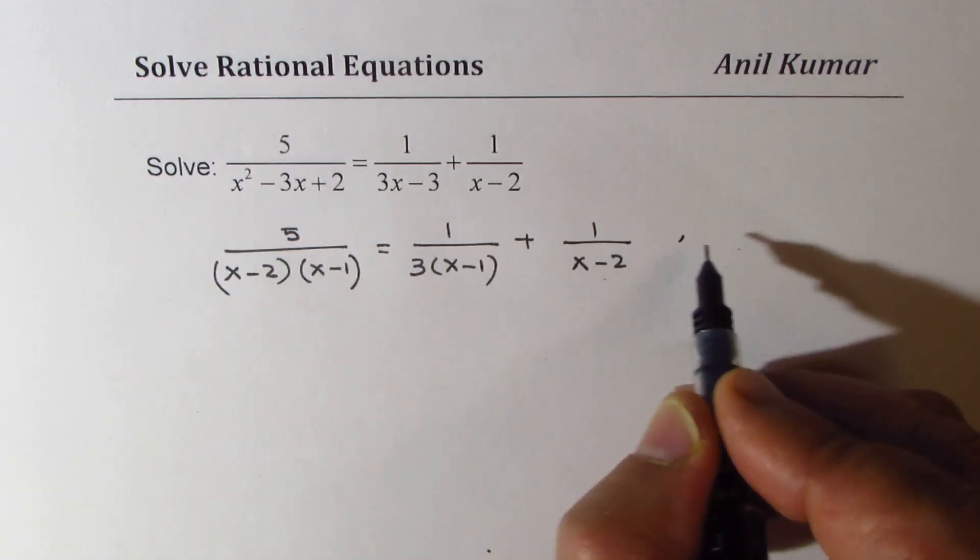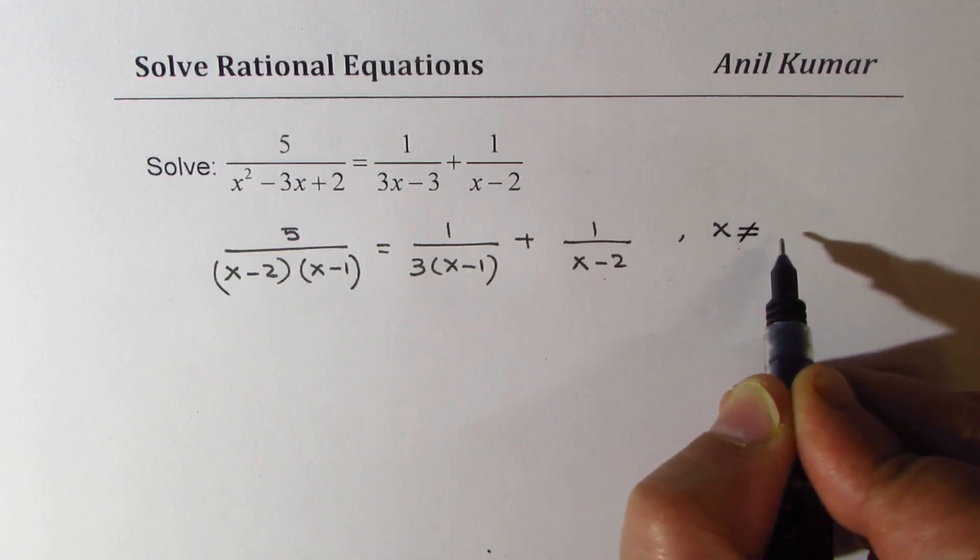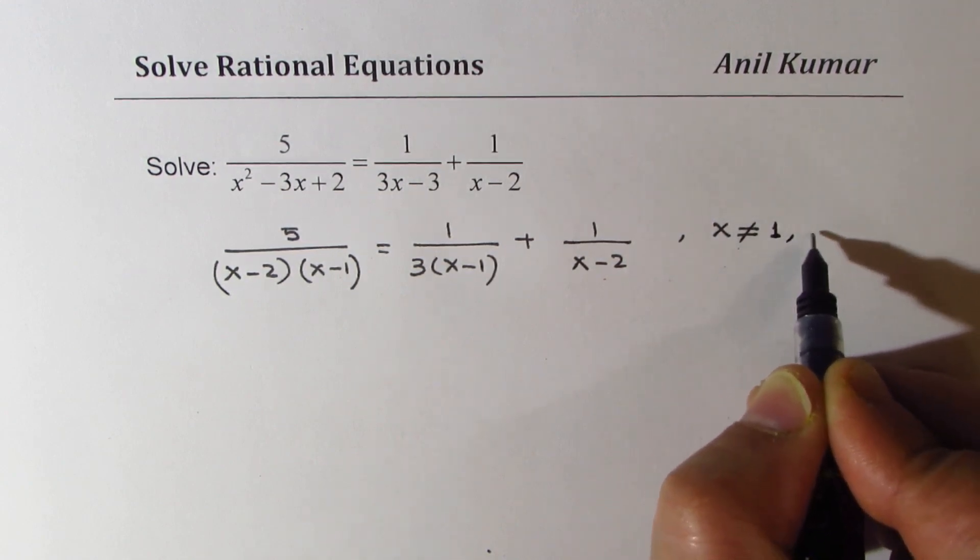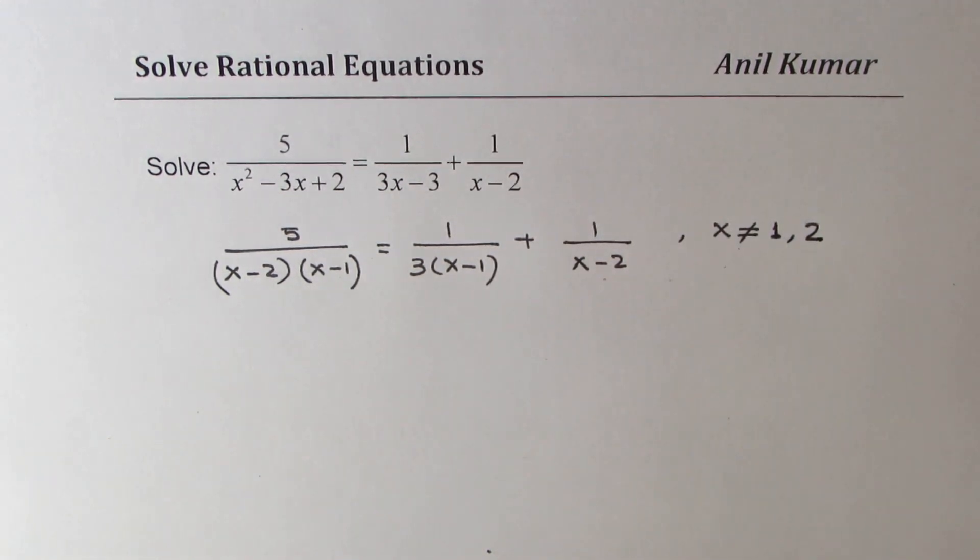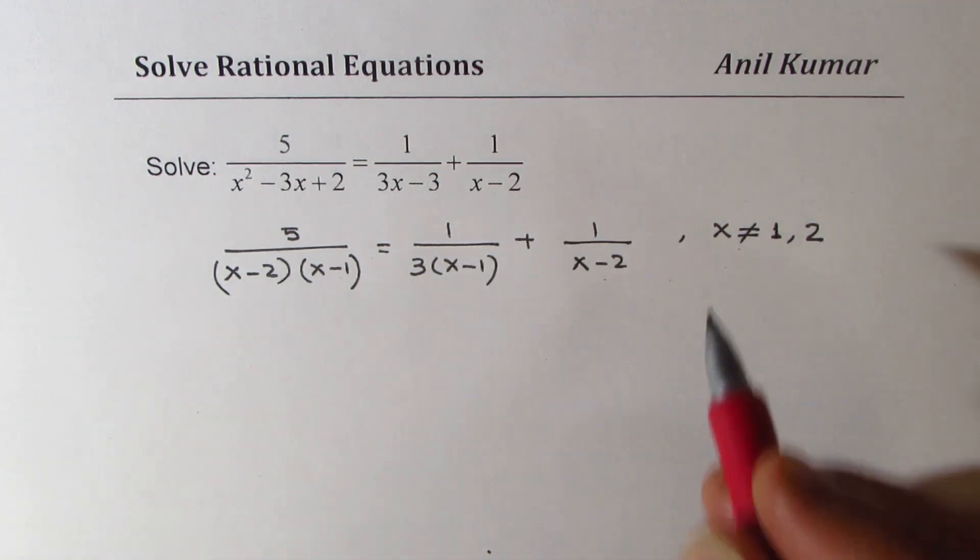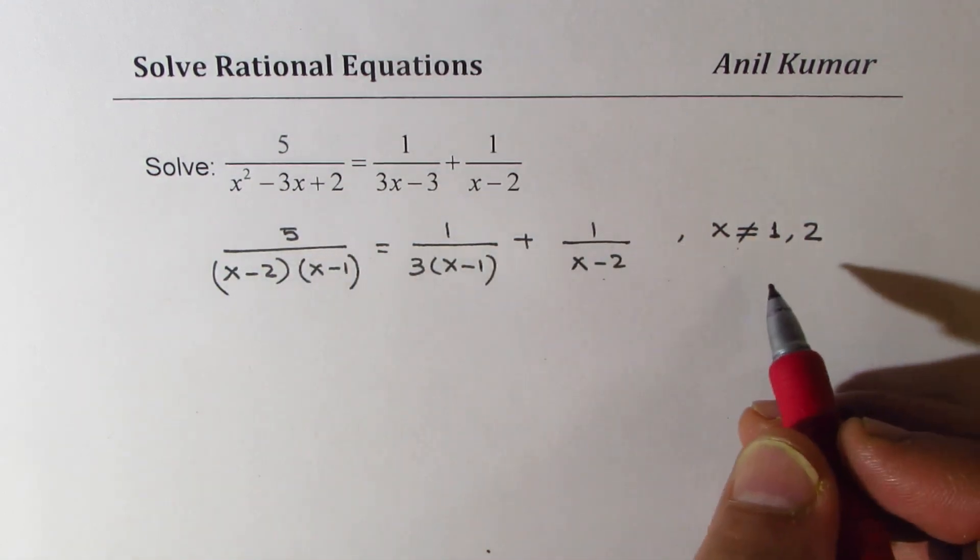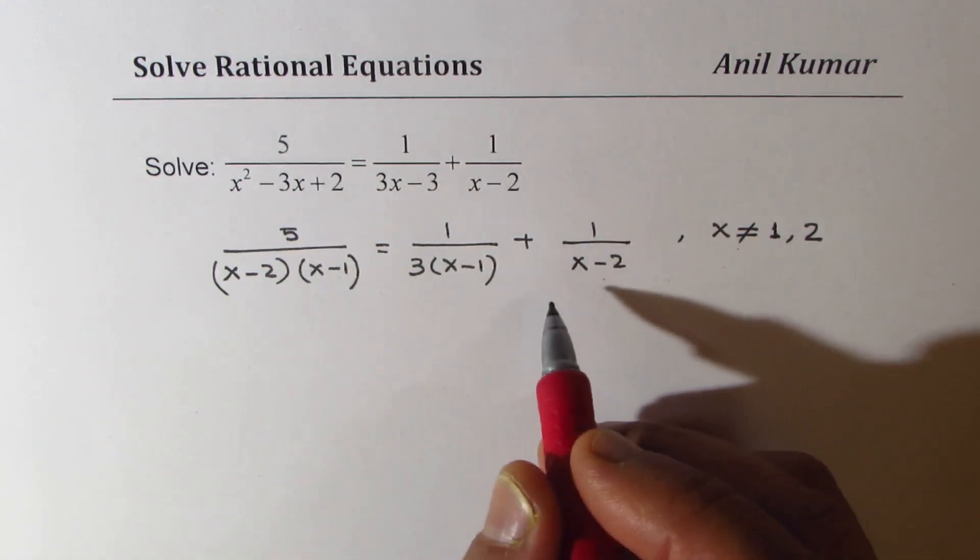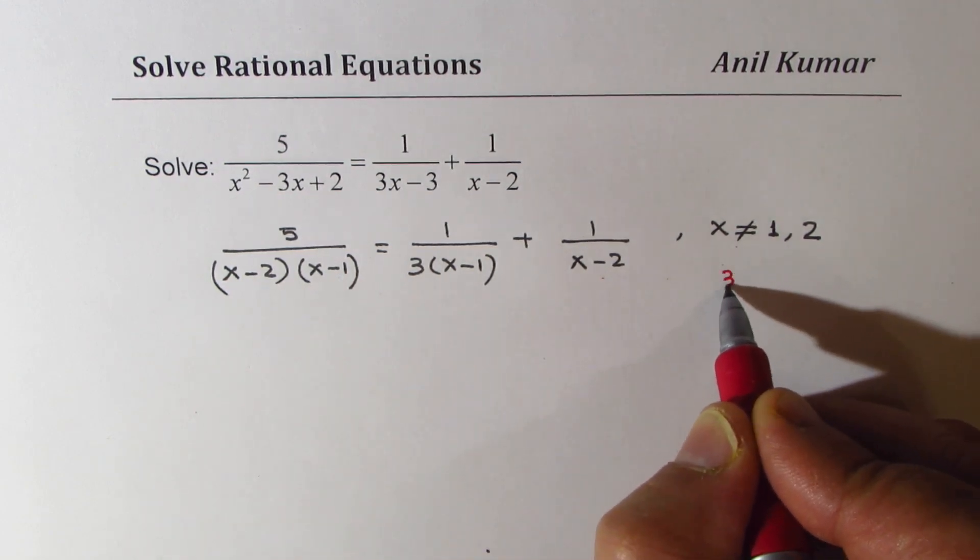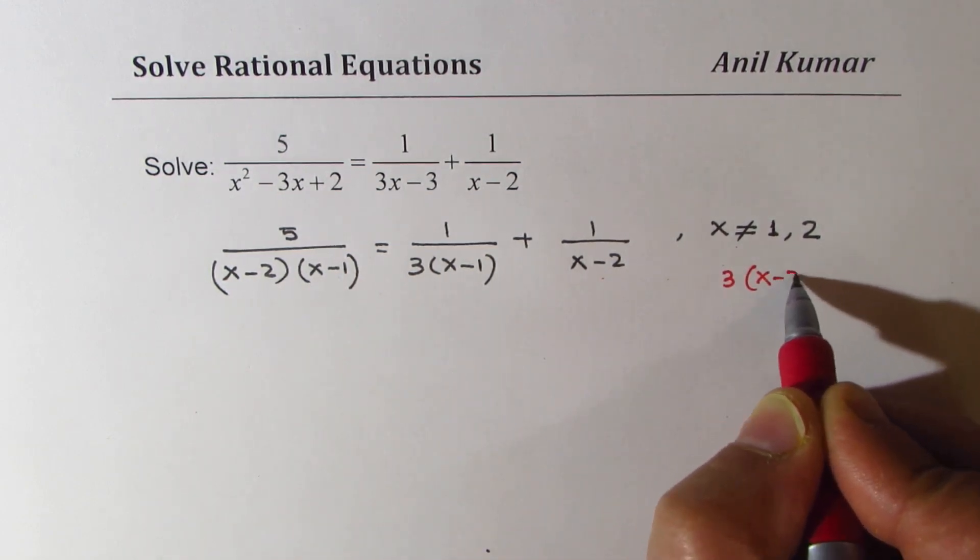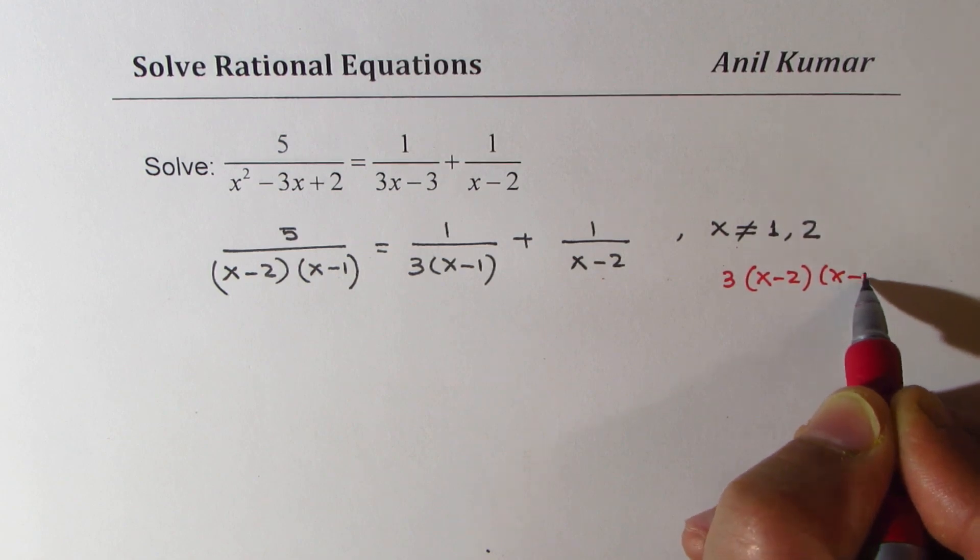Now, from here, it is very clear that x should not be equal to 1 or 2. So these two values are not valid. If you get one of those as your answer, remember, that answer is not valid. Now, again, to simplify, we are going to multiply all the expressions with the term 3 times x minus 2 times x minus 1.